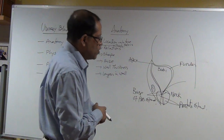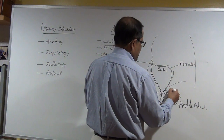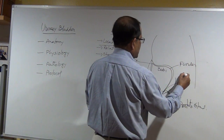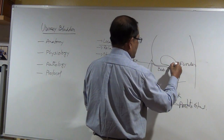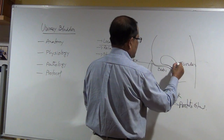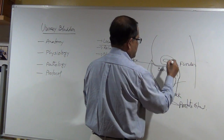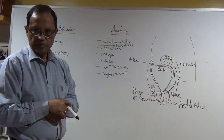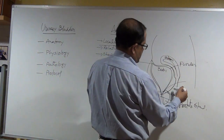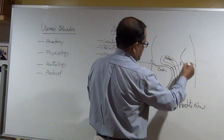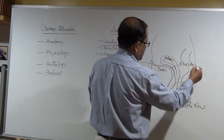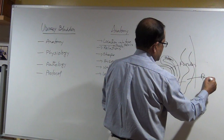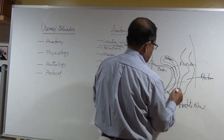Behind the bladder, for the female, there is a uterus. Behind the uterus there is a rectum, and there is also a vagina.